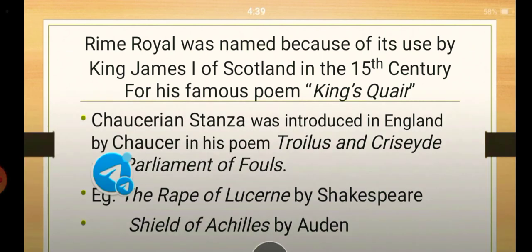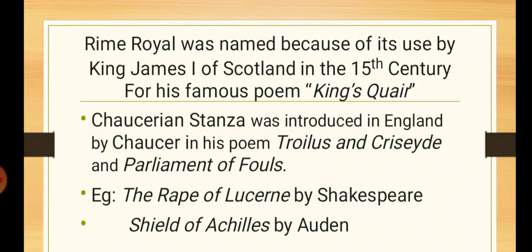Rhyme Royal was named because of its use by King James I of Scotland in the 15th century for his famous poem King's Quair. Chaucerian Stanza was introduced in England by Chaucer in his poem Troilus and Criseyde and Parliament of Fouls. Other writers who have used it is Shakespeare in The Rape of Lucrene or Auden in the Shield of Achilles.